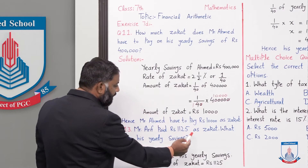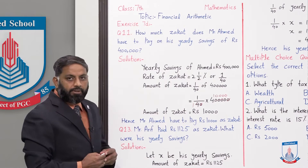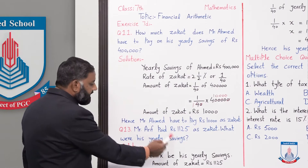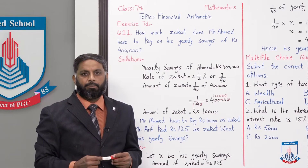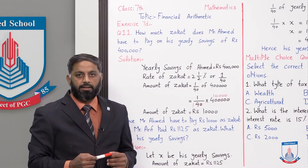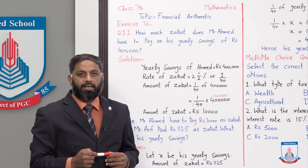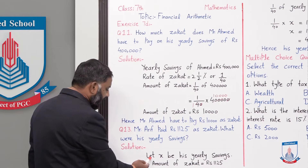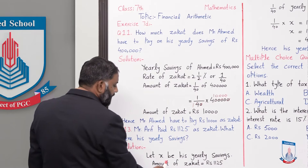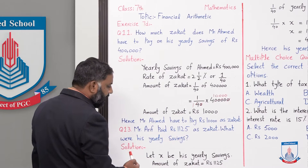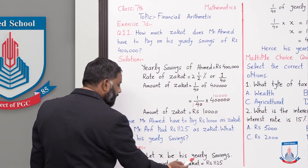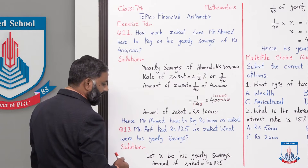Question number 13: Mr. Arif paid rupees 1,125 as zakat. What were his yearly savings? Is question mein yearly savings given nahin hain, amount of zakat given hai — rupees 1,125. Hum ne yearly savings find karni hain. Let x be his yearly savings. Amount of zakat = 1/40 of yearly savings, to 1/40 × x = 1,125.